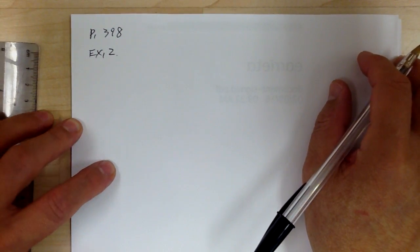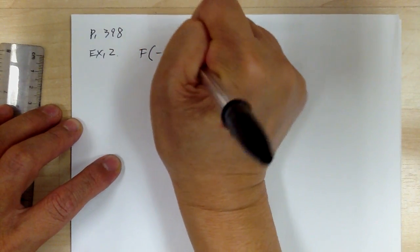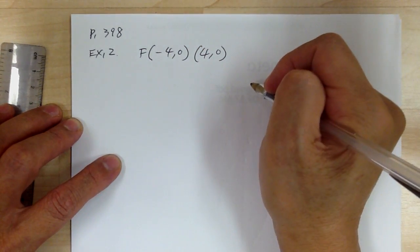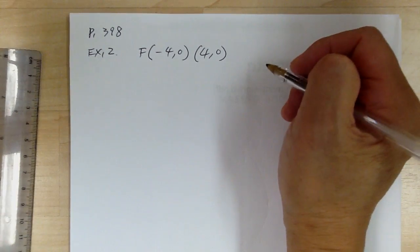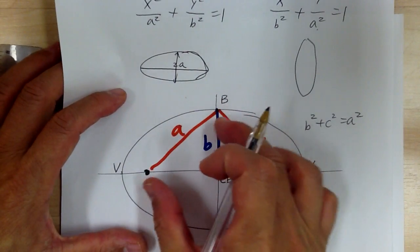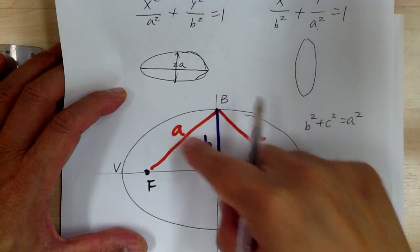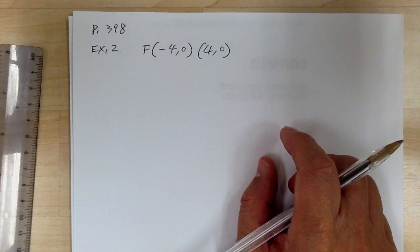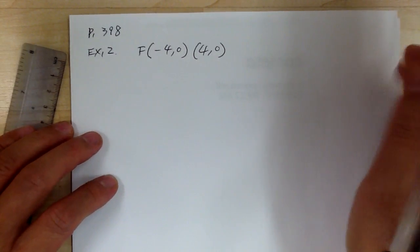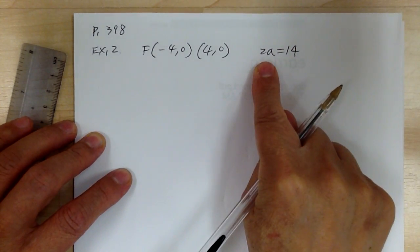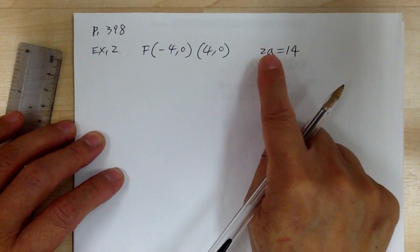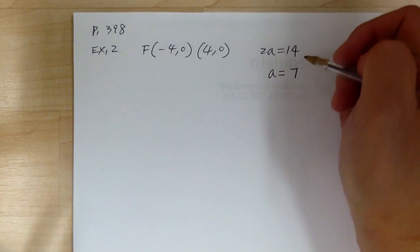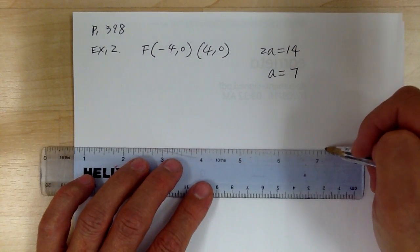Now example 2: find the equation of the ellipse. The sum of the focal radii equals 14. The focal radii are the two distances from any point on the ellipse to the two foci. The sum of the focal radii equals 2a, so 2a equals 14, which means a equals 7.